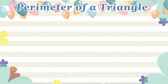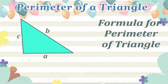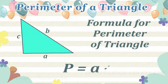The formula for the perimeter of a triangle is as shown: P equals A plus B plus C, where P refers to the perimeter and A, B, and C refer to the lengths of the three sides of a triangle.